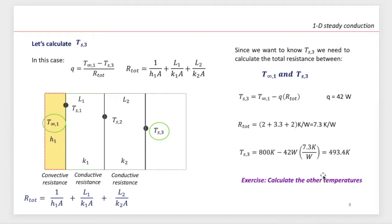So what if we want to calculate an interface temperature? This is very important, especially in design, because we want to know interface temperatures to select the materials for heat exchangers, reactors, or whatever equipment where temperature becomes pretty important. We want to know those interface temperatures — this is for design purposes.